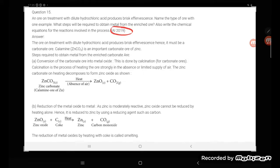An ore on treatment with dilute hydrochloric acid produces brisk effervescence. Name the type of ore with one example. What steps will be required to obtain metal from enriched ore? Also write the chemical equations for the reactions involved in this process.